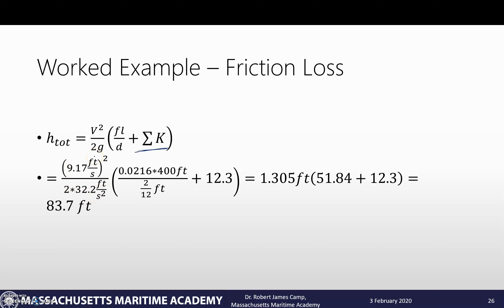0.0216 times 400 feet divided by 2/12 of a foot - those will cancel out giving us a unitless parameter - plus 12.3. Those are both unitless, we can add them together. Once we do that, we're going to end up with a total frictional head loss of 83.7 feet.